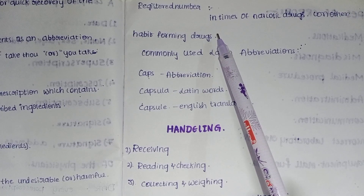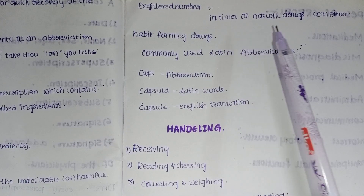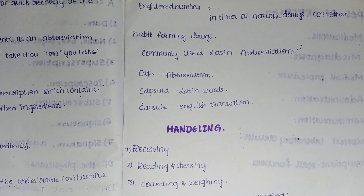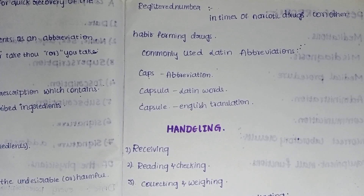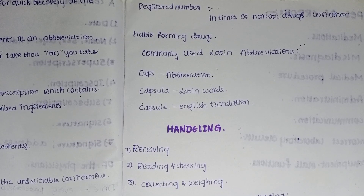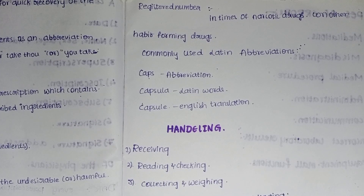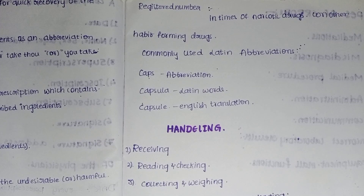Registered number. Registered number is required especially in terms of narcotic drugs or other habit-forming drugs. Narcotic drugs are given to persons who are more affected because of the intake of excessive harmful drugs. Under a doctor's prescription and recommendation only can such medicines be taken. For that reason the registered number is mentioned on the prescription.